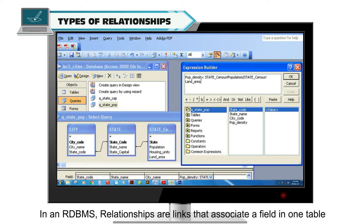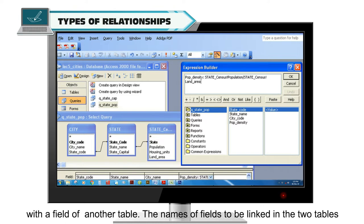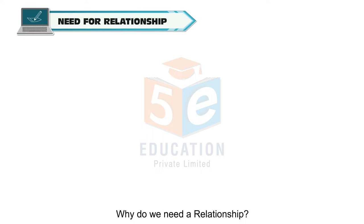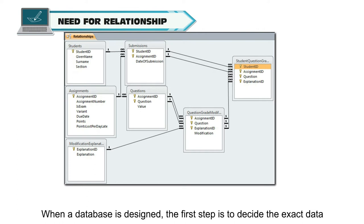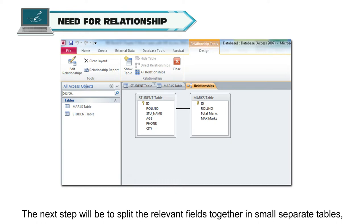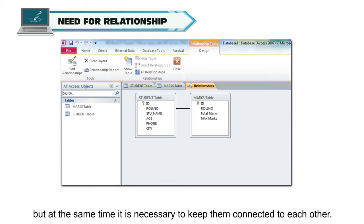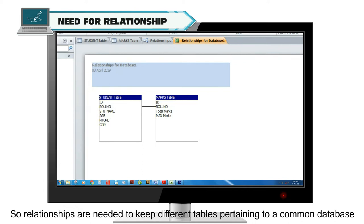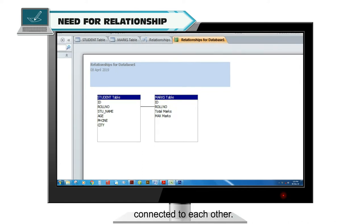In an RDBMS, relationships are links that associate a field in one table with a field of another table. The names of fields to be linked in the two tables can be different, but their data types must be the same. When a database is designed, the first step is to decide the exact data to be stored in each table, then split the relevant fields into small separate tables, while keeping them connected to each other. Relationships are needed to keep different tables pertaining to a common database connected.